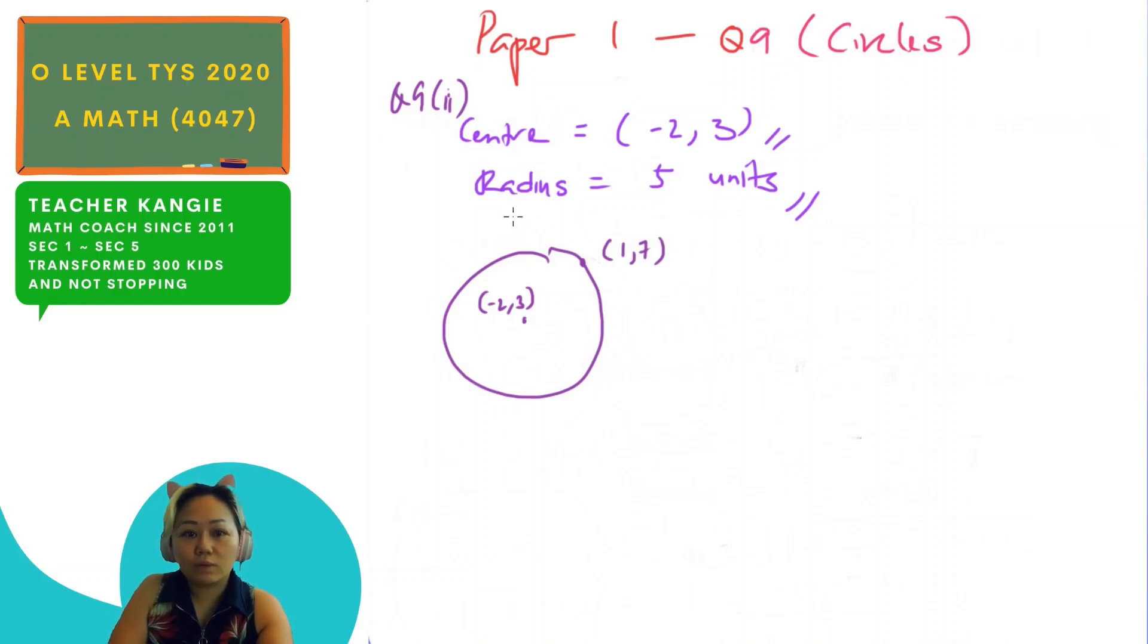So they say it's a tangent line. So I'm going to draw a line that cuts through this point. And I'm going to draw from the center to this point. And we know that properties of circle tell us that radius is perpendicular to the tangent. So this is 90 degrees.